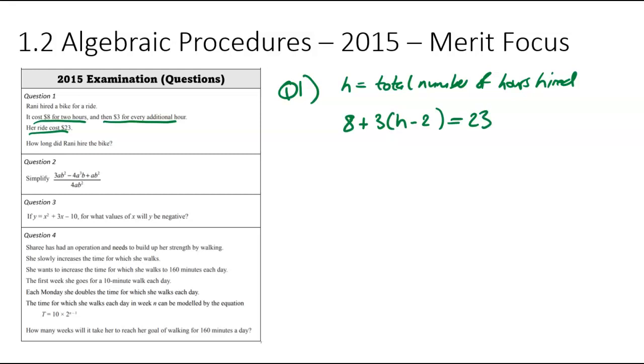From that, we can do a bit of Algebra. We're going to use our linear solving skills. We're going to go minus eight minus eight. So three bracket h minus two is equal to 15. I'm going to divide by three here. You could also have expanded the brackets, but I'm not going to worry about doing that. So we've got h minus two is equal to five. And then finally, I'm going to go plus two plus two. So h is equal to seven hours in total.